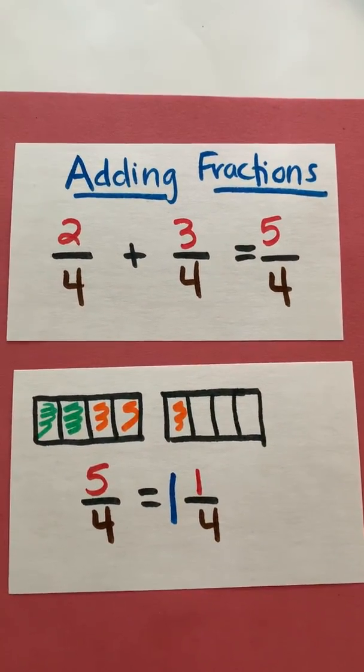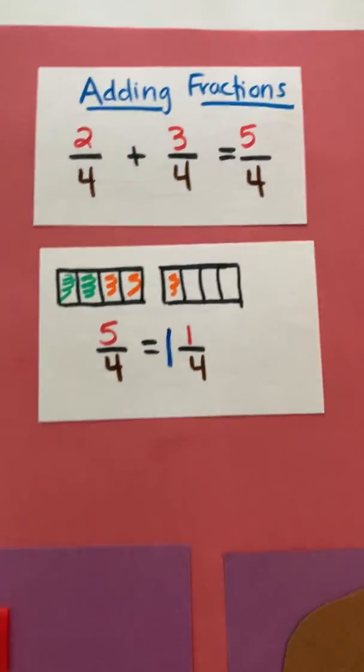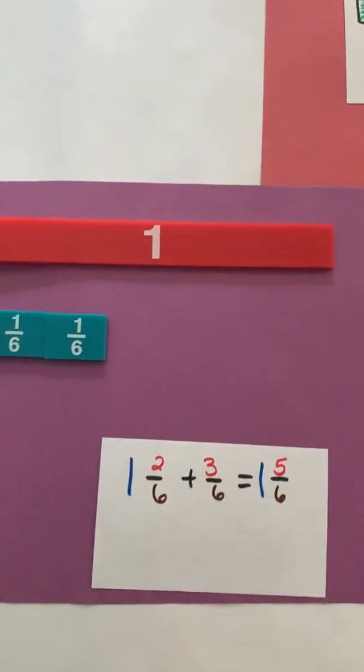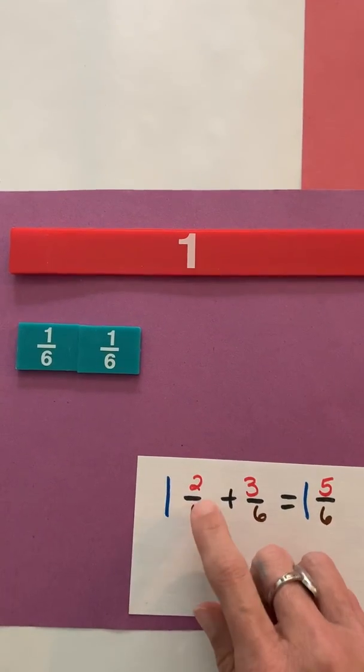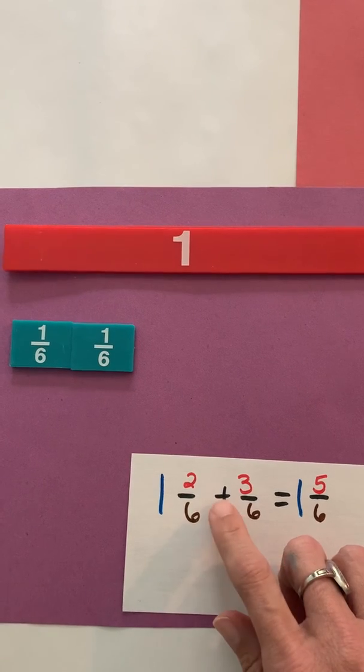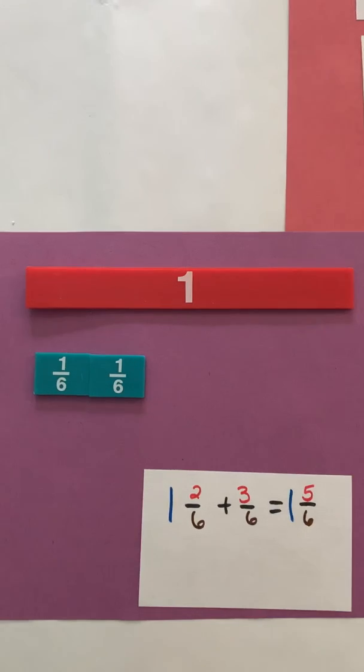All right, now what we are going to do is look at adding mixed numbers. So here you can see I have a mixed number plus a fraction. I have a whole number of one, and I have a fraction of two-sixths plus a fraction of three-sixths. Our sum will be one and five-sixths, and I'm going to show you how I got that.